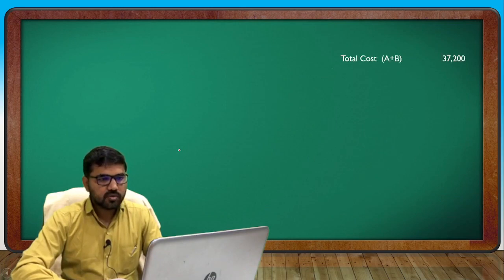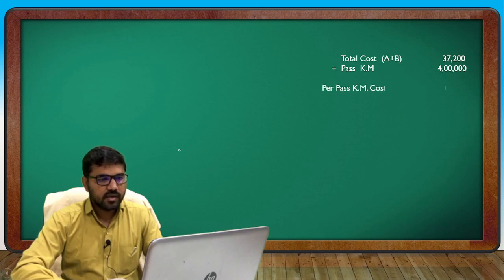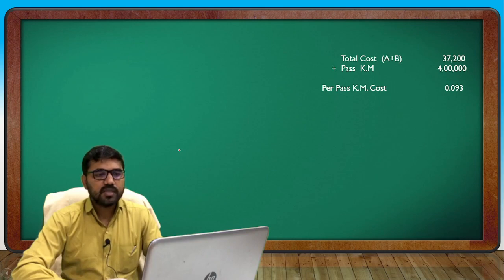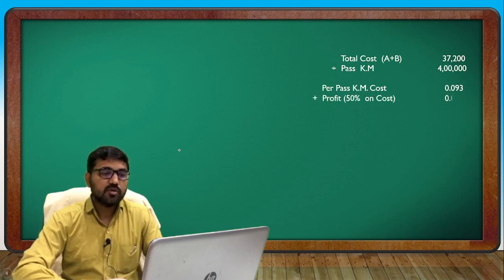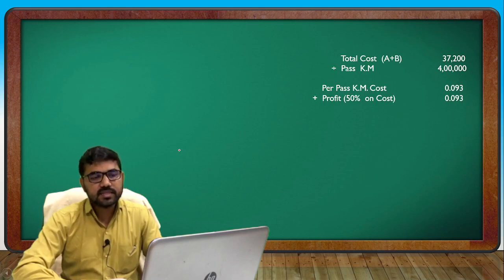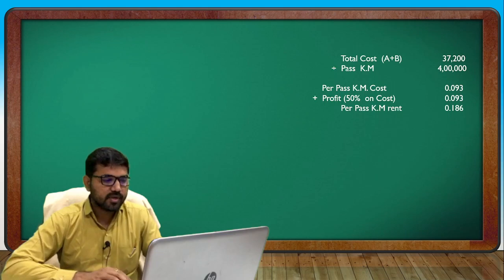Total cost is 37,200. Dividing total cost 37,200 by passenger kilometers 4,000 gives cost per passenger kilometer of 0.093.